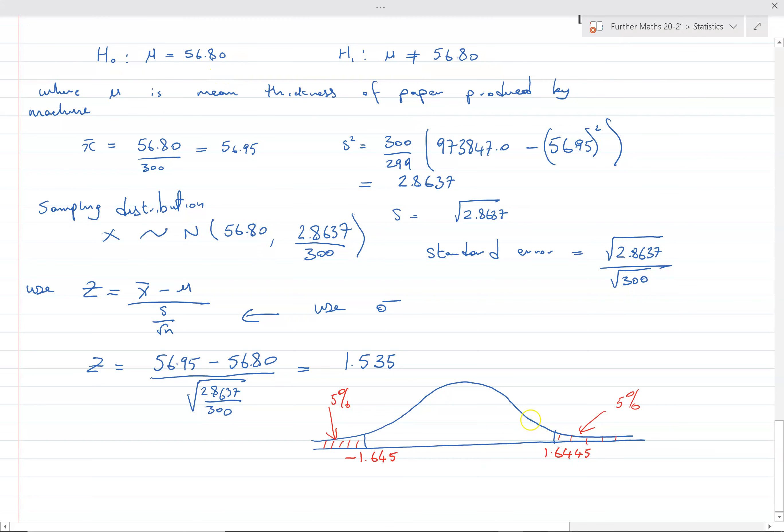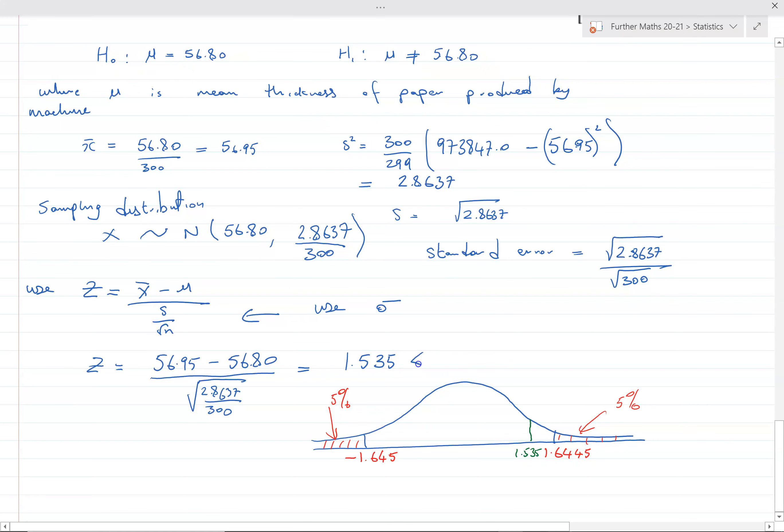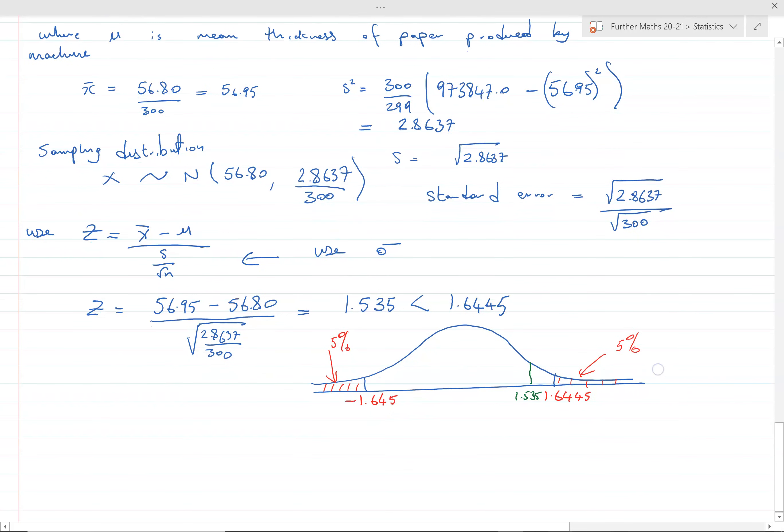Our value is 1.535, let's write that in. That's less than 1.6445. In order for it to be in the tail we'd need to reject the null hypothesis, so...